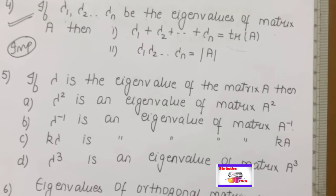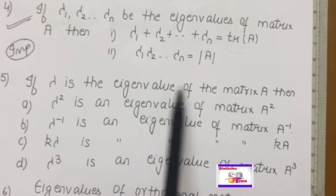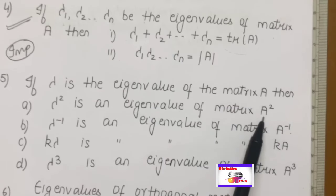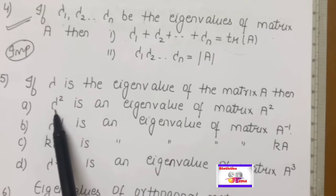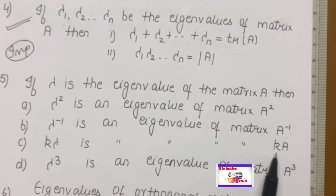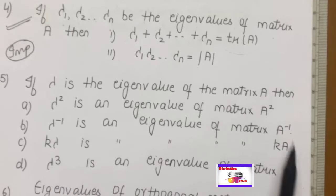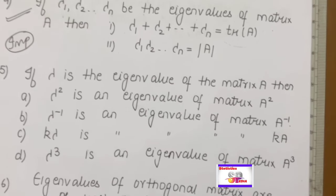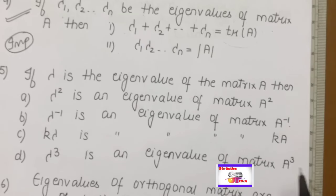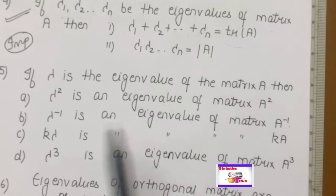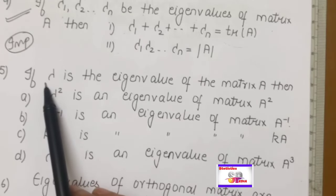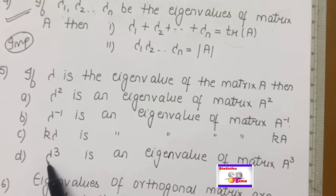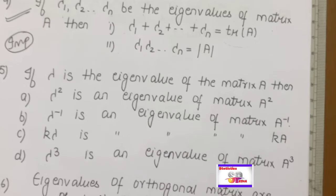Next important property: if λ is an eigenvalue of matrix A, then for A², the eigenvalue is λ²; for A⁻¹, it is λ⁻¹; for kA, it is kλ; and for A³, it is λ³. These properties are very helpful when working with Cayley-Hamilton theorem or when you have expressions involving powers of A — you simply replace with the corresponding power of λ.